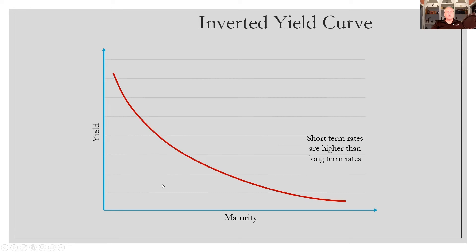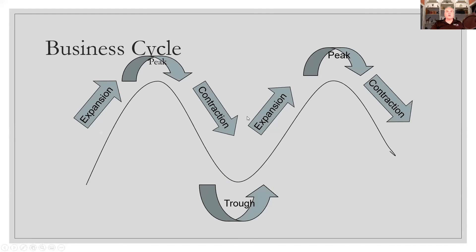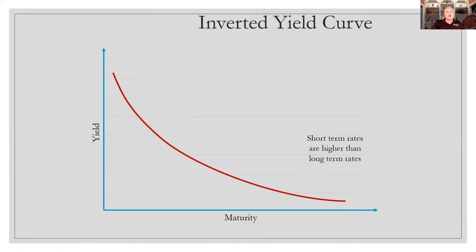And so sometimes what you'll have is the Federal Reserve will increase interest rates in that overnight market. It'll take a little while for the rest of the market to create that normal yield curve. And so you'll have a flash of this inverted yield curve. And again, even if it does stay inverted for two quarters,